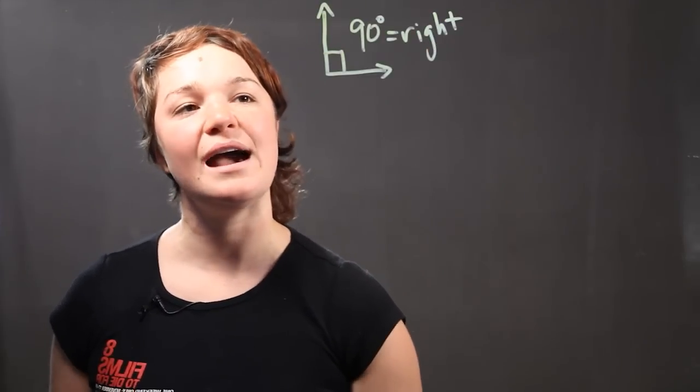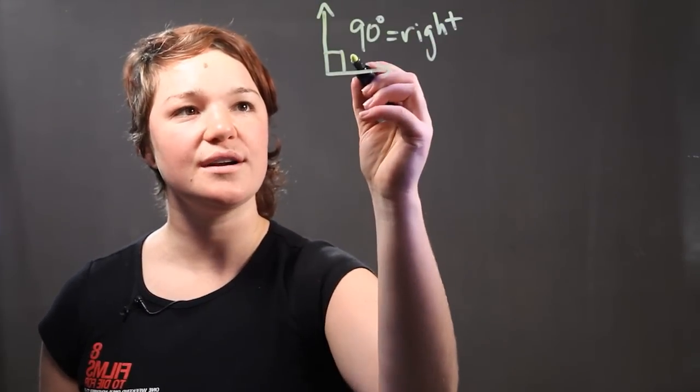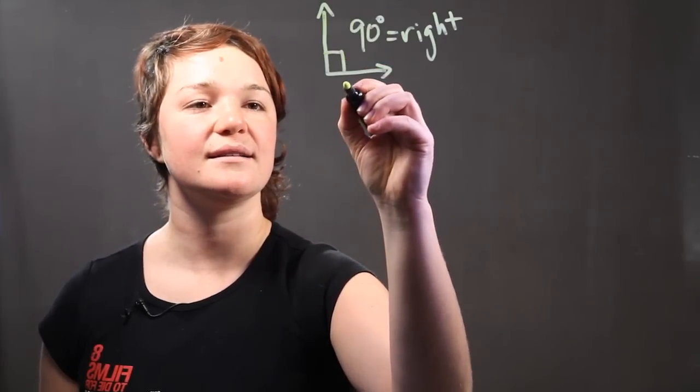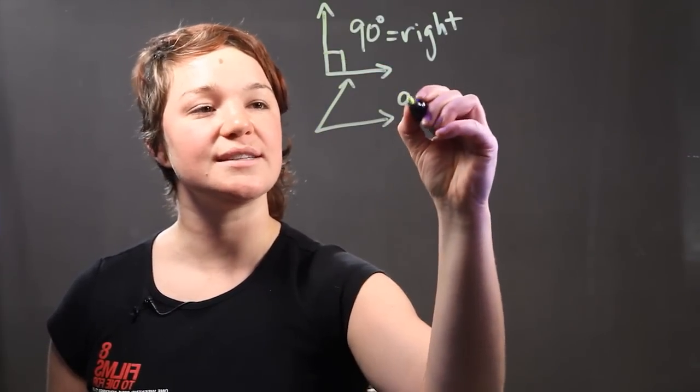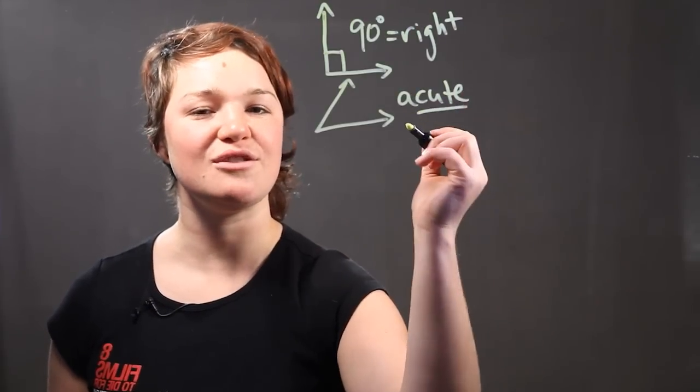Now, if we have an angle that has smaller than 90 degrees inside, it looks something like this. And this is called an acute angle. Cute, huh?